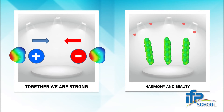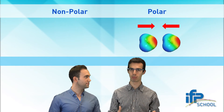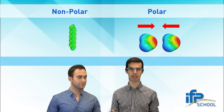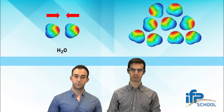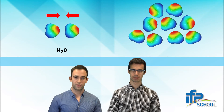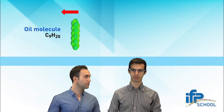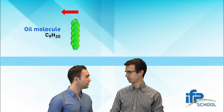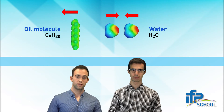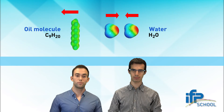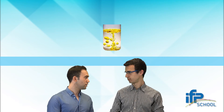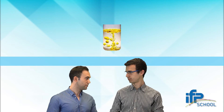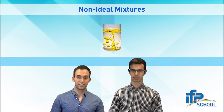I still don't understand why they don't mix. 'Together we are strong' won't let 'harmony and beauty' disturb their togetherness. I get it. So we cannot mix oil and water because we are mixing a polar component with a non-polar one — is that right? Exactly. The polar water forms a network that is very stable with its hydrogen bonds. Oil — gasoline is like a light oil — doesn't fit into this network. It will remain liquid, but will not mix. That's why you cannot mix water with gasoline or oil. These mixtures are called non-ideal.